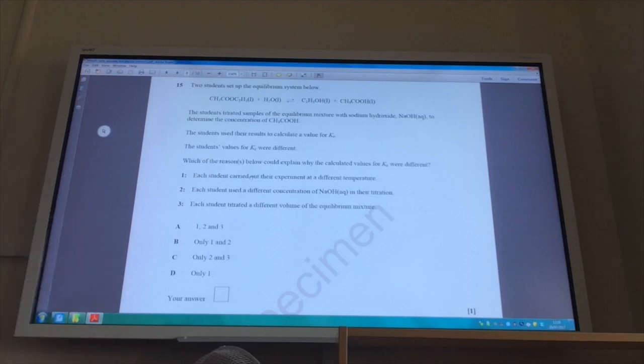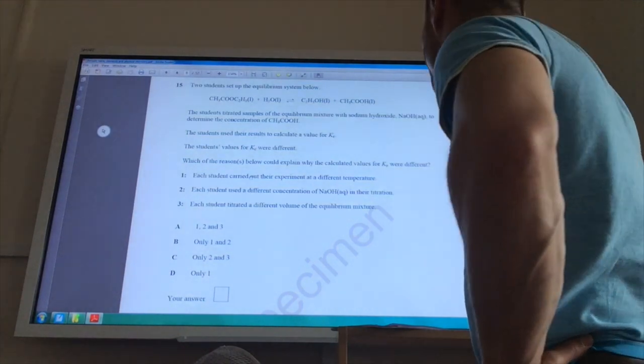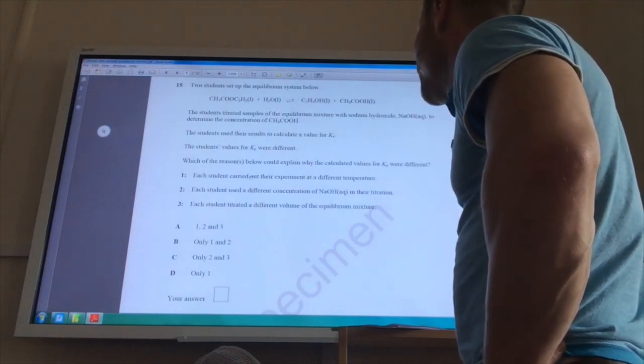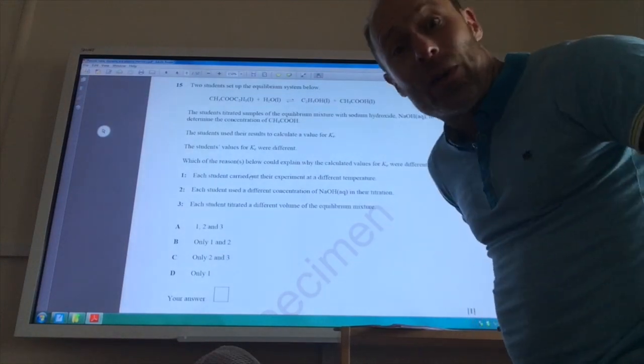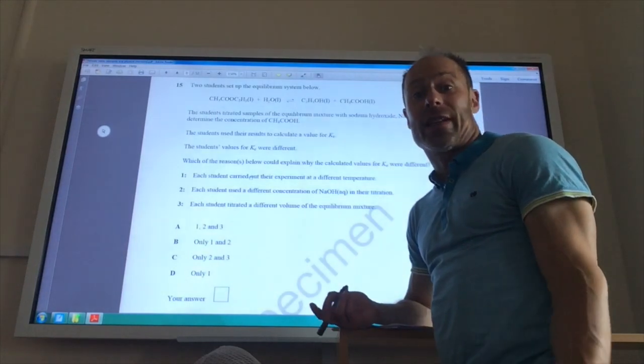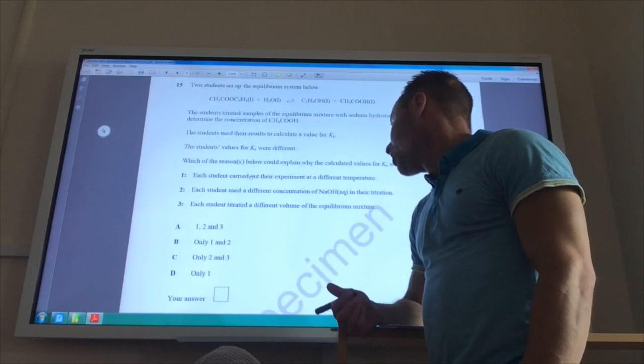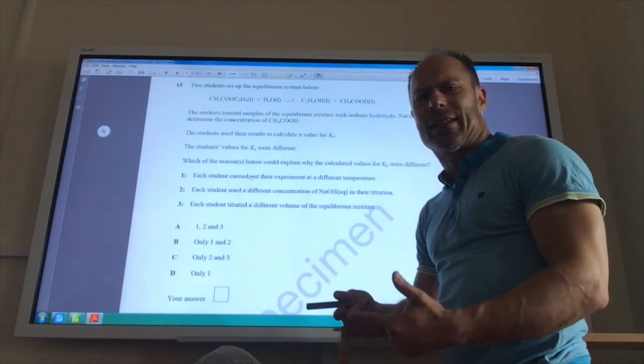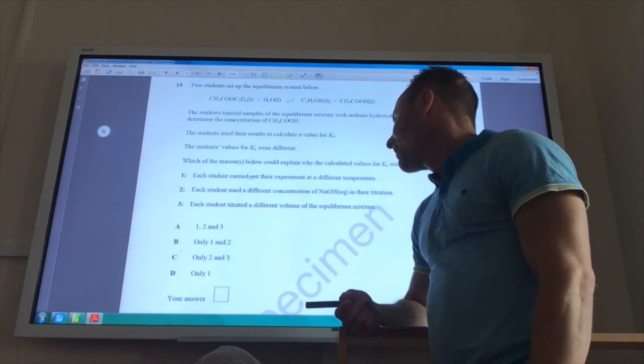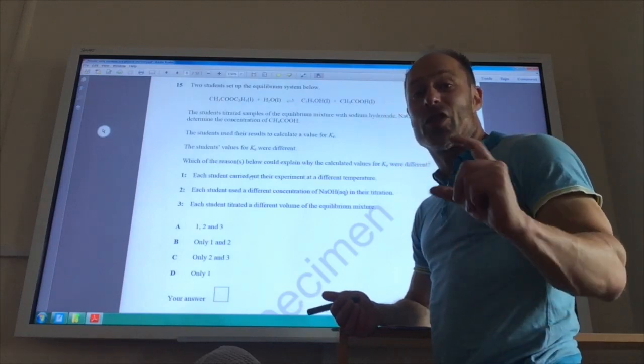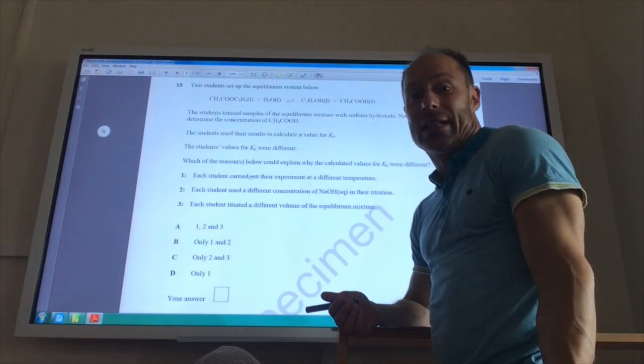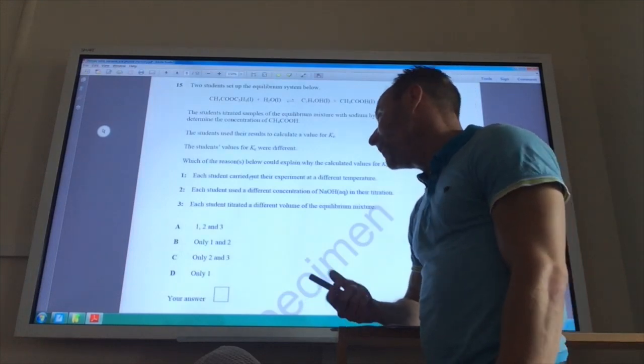Here we go then. Two students set up this equilibrium system. Titrated samples of the equilibrium mixture of sodium hydroxide to determine the concentration of ethanoic acid. Use the results to calculate Kc. But they were different. Which of the reasons below could explain why they're different? Each student carrying out the experiment at different temperatures. That would make them different, of course. Because Kc varies with temperature. So you're doing the experiment at two different temperatures, you're going to get two different values of Kc. Each student uses a different concentration of sodium hydroxide in the titration. That won't make any difference at all. Because you'll just carry that through in your calculations. If you're using a lower concentration of sodium hydroxide, your titer will be higher. But it will all work out the same. Each student titrates a different volume of the equilibrium mixture. Again, that would make no difference at all. So the only one would make a difference. So the answer is D.